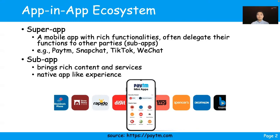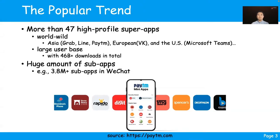For example, Paytm is a popular mobile payment application from India. Users can order Domino's pizza or use a bike taxi in this super app without installing their separate mobile app versions. So far, these app-in-app ecosystems have gained a lot of popularity worldwide. As of the time of our work, there are 47 high-profile super apps with more than 46 billion downloads in total.